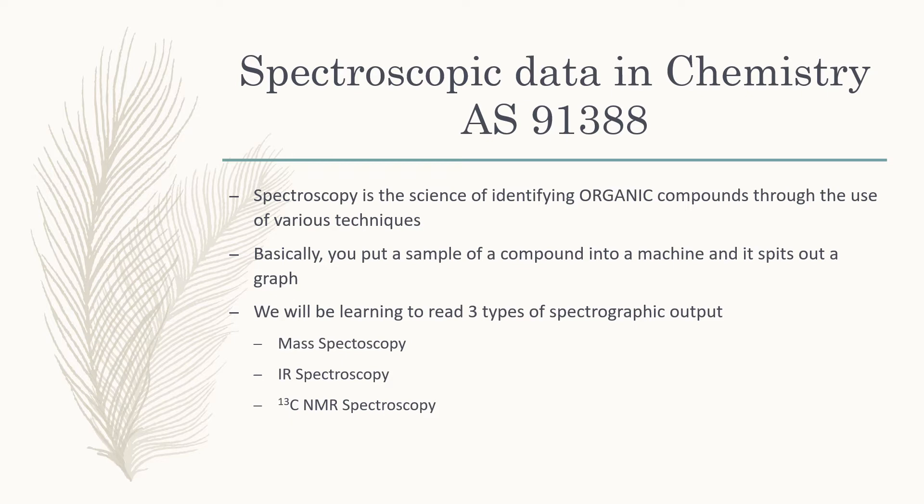The three types we're going to be looking at are mass spectroscopy, which is based off the mass of different fragments of our compounds; IR spectroscopy, which looks at the different types of bonds that are present; and 13C NMR spectroscopy, which looks at the different number of carbon environments in different molecules. More on those later.